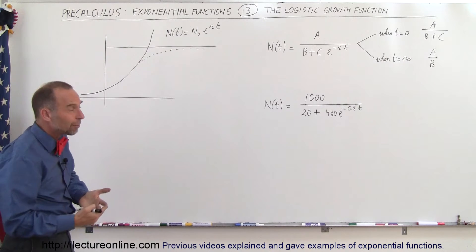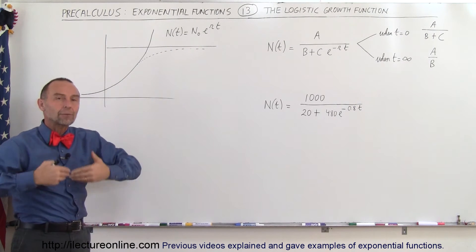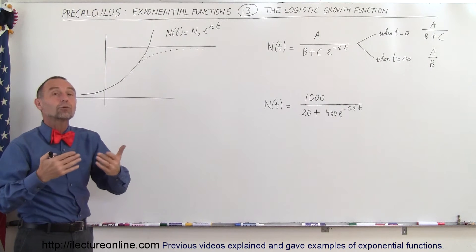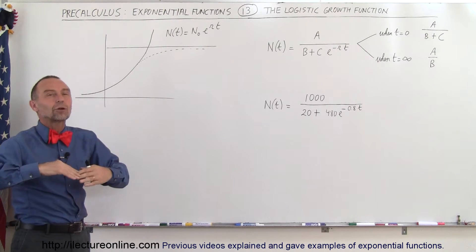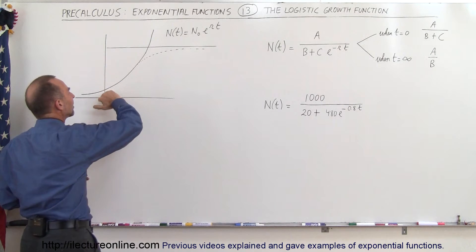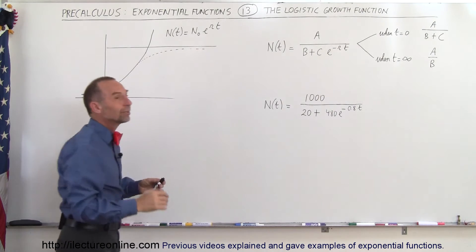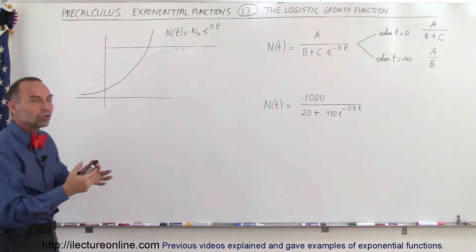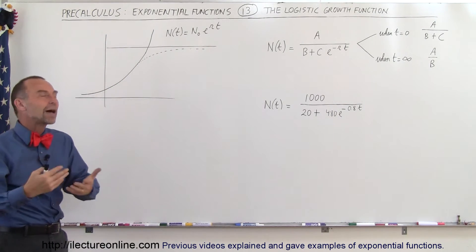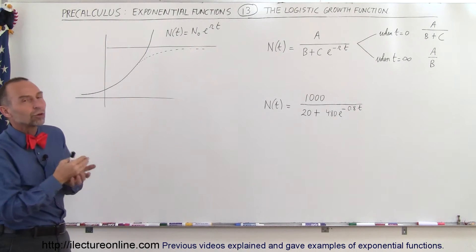But in real situations, for example population growth, at some point the things that feed into allowing the population to grow will run out or the supply will be limited so that only a certain population could be maintained. And so what happens is that the growth then levels off and then eventually asymptotically reaches a maximum level that the existing resources can then sustain the amount of the population that's then present. And so we call that the logistic growth function.